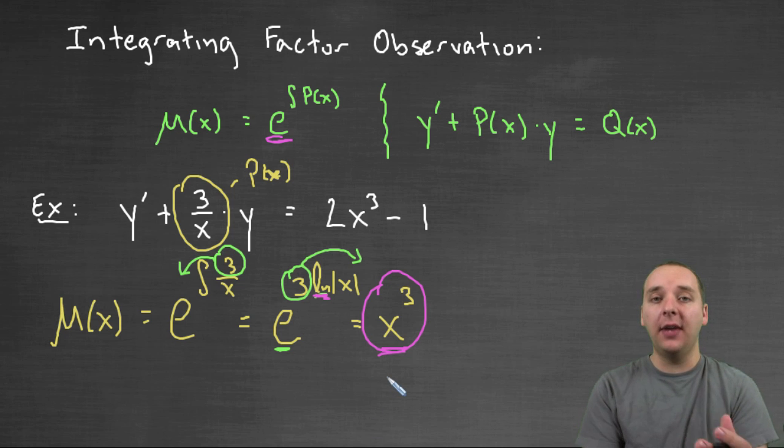Now does that have to happen? Absolutely not. We have plenty of examples where the integrating factor is e to the 2x, or e to the 5x, or something like that, and that's completely fine. But I just wanted to make a quick observation that a lot of these work out to your benefit when the integrals have logarithms, so just be on the lookout for that.